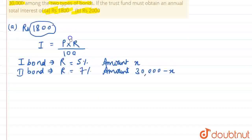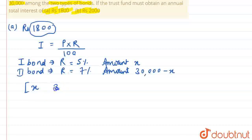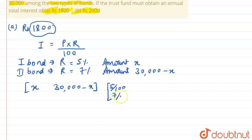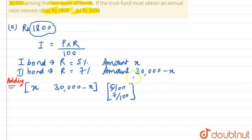We will use matrix multiplication. We write a row matrix [X, 30,000 − X] and multiply it by a column matrix [5/100, 7/100]. The product gives us the combined interest from both bonds, which equals Rs. 1800. What we are effectively doing is adding the interest from the first bond (X × 5/100) and the second bond ((30,000 − X) × 7/100), and setting their sum equal to 1800.